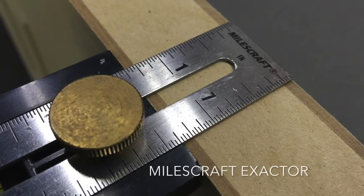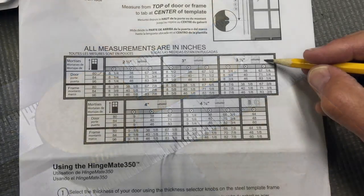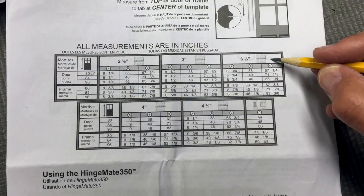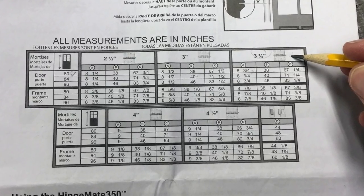To route mortises for a new hinge installation, you will need to first measure the thickness of your door. Included in every kit is a layout sheet that tells you exactly where to mark your lines based on the size of your door.